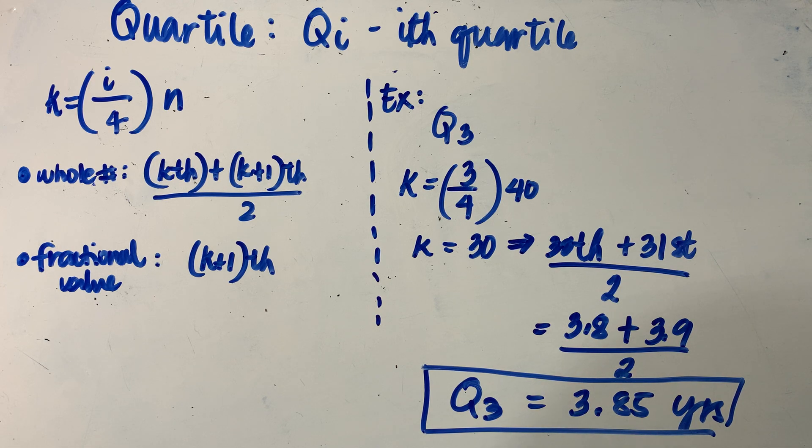that means to say that three out of the four equal divisions, equivalent to 75%, of the car batteries in our distribution will have a lifespan of less than 3.85 years. Or another way of interpreting it is that 25% of the car batteries in our distribution will have a lifespan which is greater than 3.85 years.